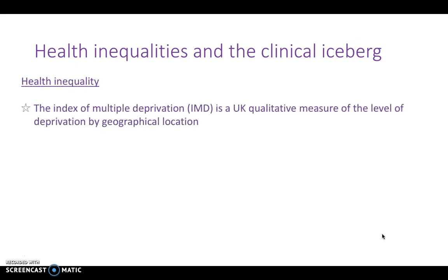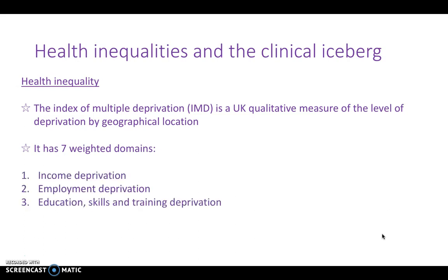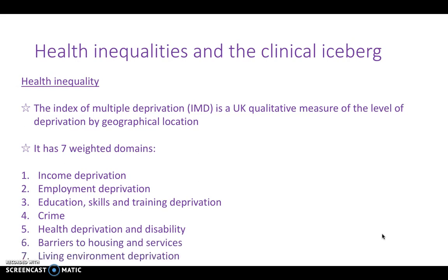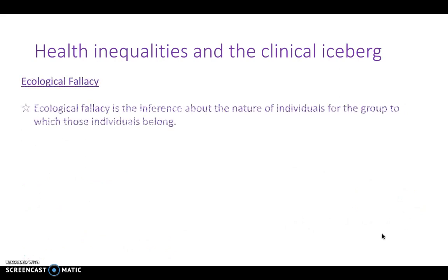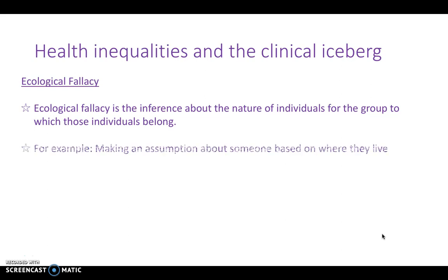Health inequality can be measured by the index of multiple deprivation, which the UK uses as a qualitative measure of the level of deprivation of geographical locations. It has seven weighted domains: income, employment, education, crime, health, and others — health being the one we want to focus on. Ecological fallacy ties in very closely with the index of multiple deprivation, because ecological fallacy is the inference about the nature of individuals from the group to which they belong — for example, assuming that someone in a geographical area is the same as everyone else in that geographical area.